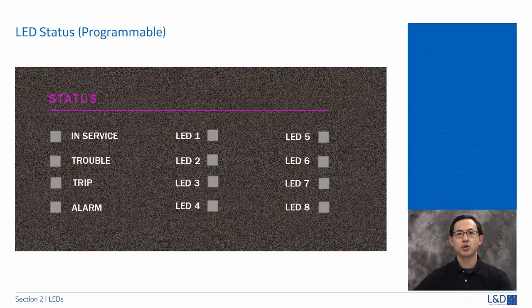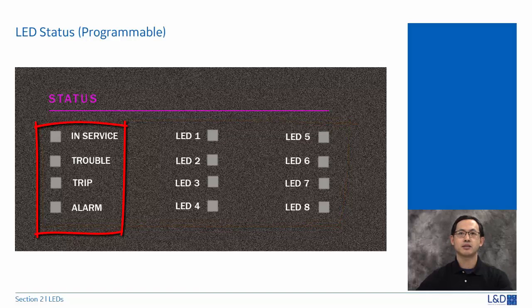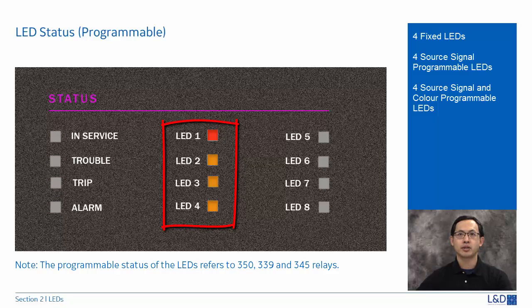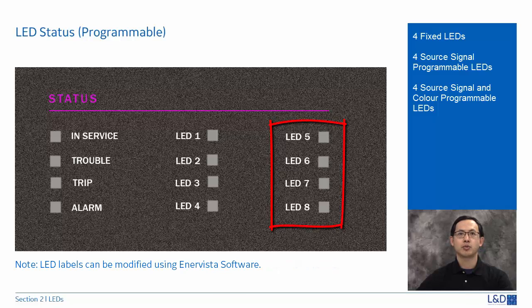The front panel with programmable LEDs has 12 LEDs. The first LEDs are dedicated to in-service, trouble, trip, and alarm, using the same color convention as non-programmable LEDs. The second group is for source signal programmable LEDs one to four: LED one is red, and two, three, four are orange. The third group is for LEDs five to eight, which are programmable in source signal and also in three colors: red, orange, and green.